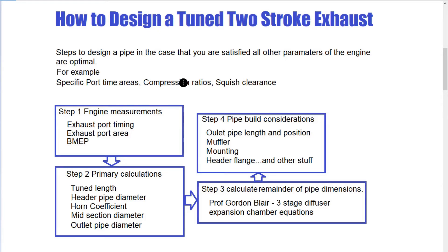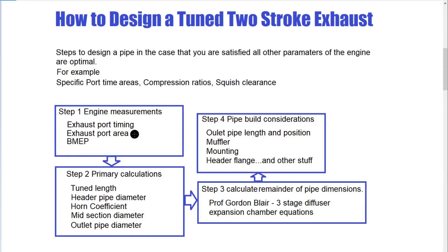If that's all in order and you're satisfied that you just want to build an expansion chamber, or you don't want to make any modifications to the engine, then watch this video and the series of these videos. I'll put it into one playlist so we can keep track of it. We'll go through the steps of what we need to design a standalone pipe — the first being taking some measurements of the engine, exhaust port timing, and the exhaust port area, covering how to measure the exhaust port and any related calculations.